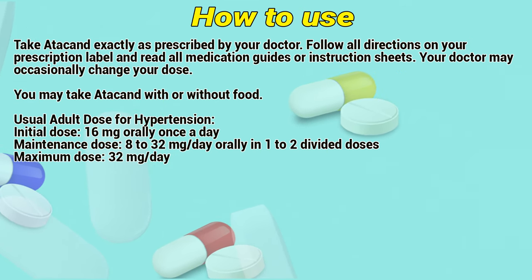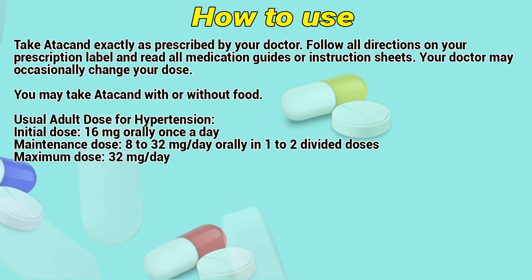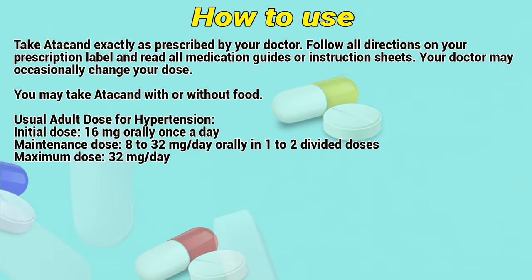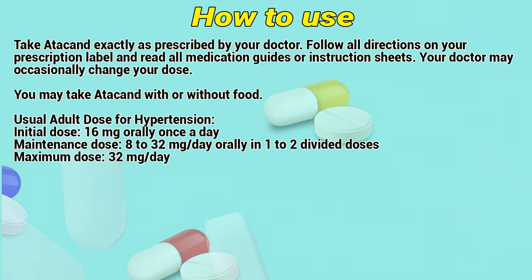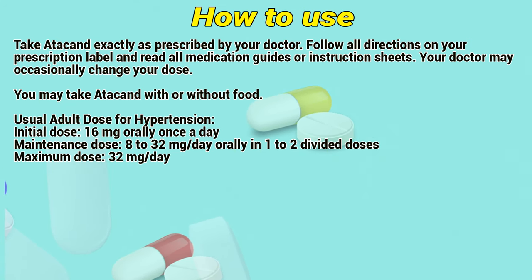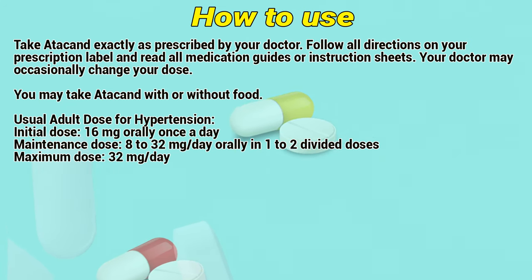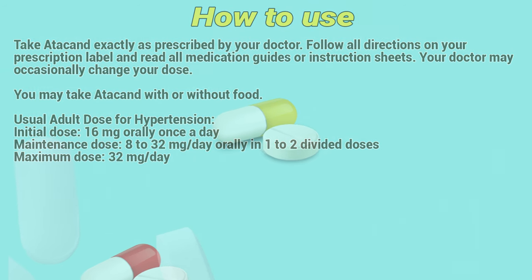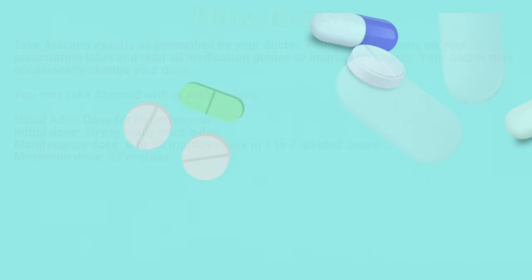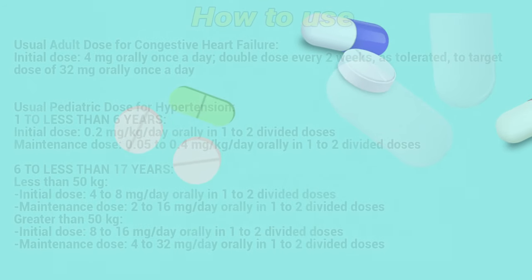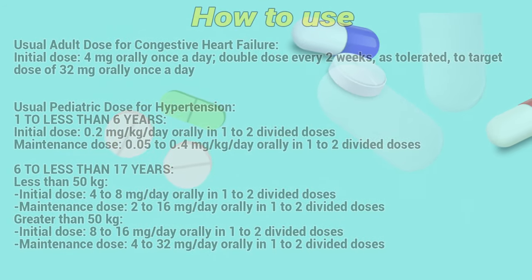Usual adult dose for hypertension: Initial dose — 16 mg orally once a day. Maintenance dose — 8 to 32 mg per day orally in 1 to 2 divided doses. Maximum dose — 32 mg per day. Usual adult dose for congestive heart failure.